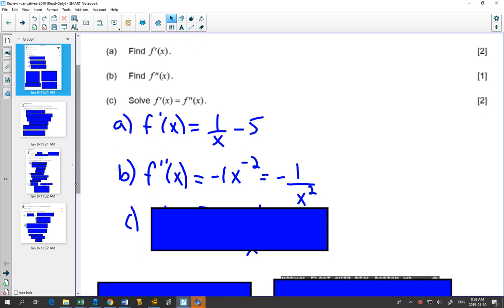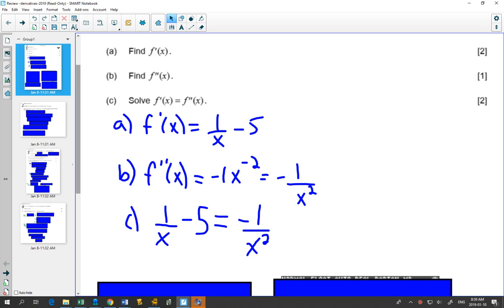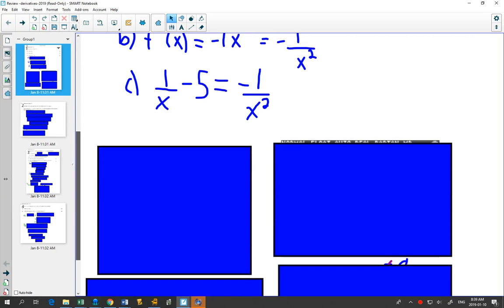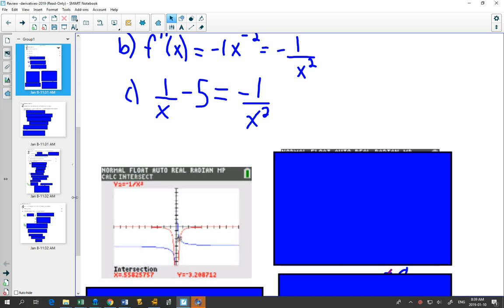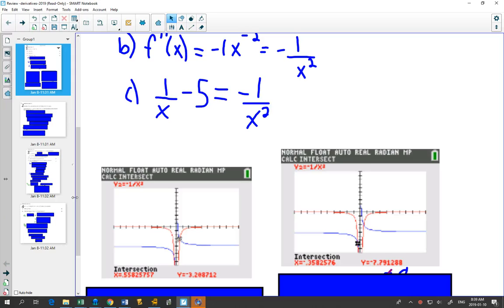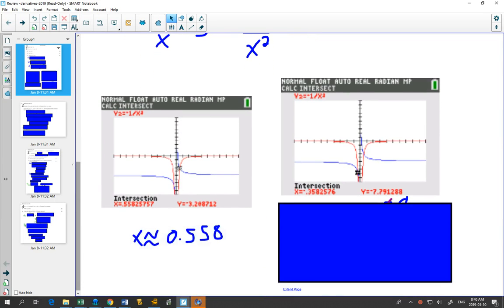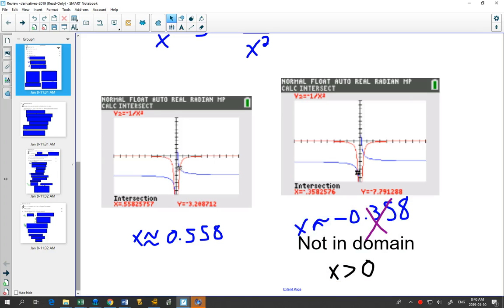Part C says, solve when f prime of x equals f double prime of x. If you have a calculator available on an exam, and this is in a calculator section, get used to using it as a quicker way. I know we could work at this algebraically, but if you type the left-hand side into y1 and the right-hand side into y2, it draws a crazy graph, but on that graph you could find the two intersection points, round those to three sig figs.